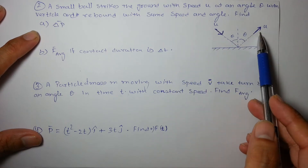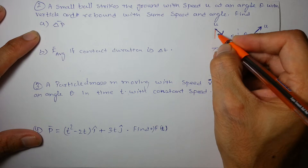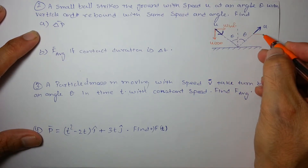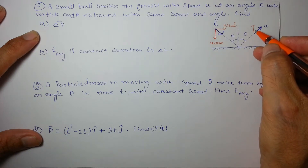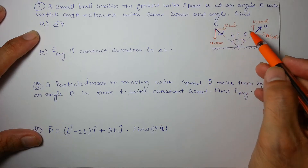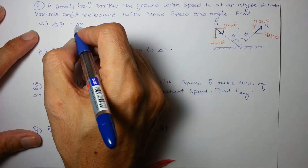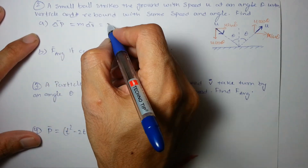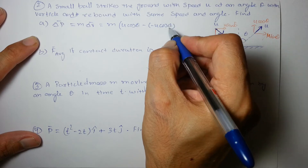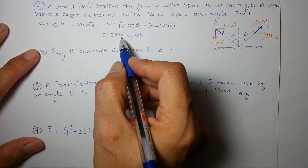In the next example, a small ball strikes the ground with speed u at angle θ with the vertical and rebounds with the same speed and same angle. Taking components: u·cosθ and u·sinθ. The sin component is unchanged, but u·cosθ reverses direction. So change in momentum = m × 2u·cosθ, giving 2mu·cosθ.